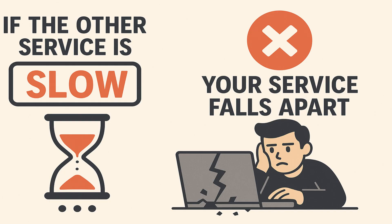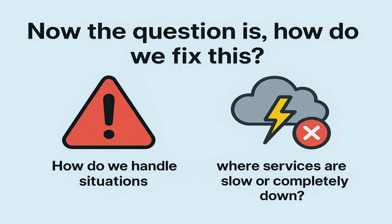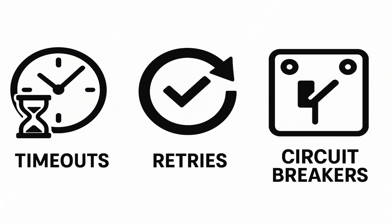All because of that one slow dependency. So the question is how do we fix this? How do we handle situations where services are slow or completely down? That's where concepts like timeouts, retries, and circuit breakers come in.